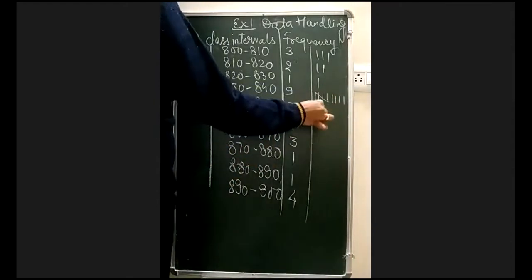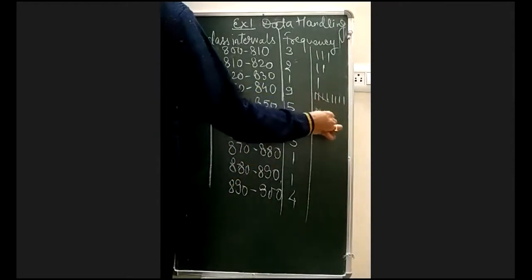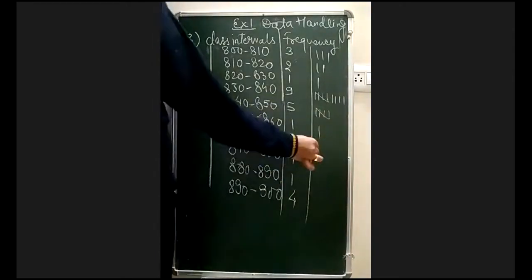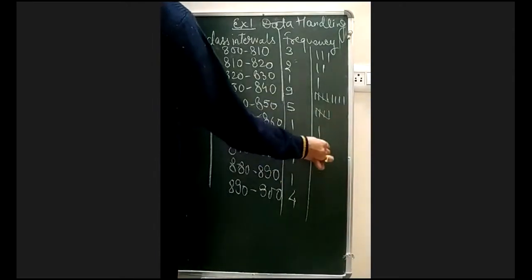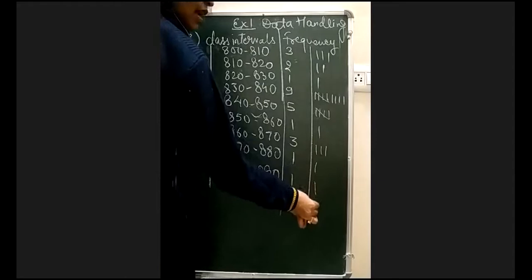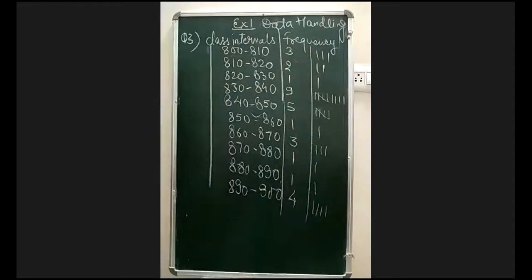Continuing the tally count: 830–840 gives 1, 2, 3, 4, 5 — so that interval has 5. Then 840–850 gives 1, 2, 3, 4 — that is 4. Next intervals give 5, then 1, then 3, then 1, then 1, and finally 1, 2, 3, 4. So all tally marks and frequencies are now complete.